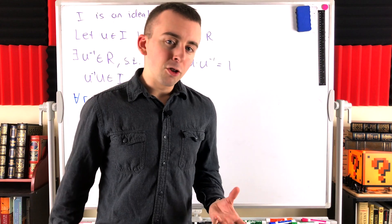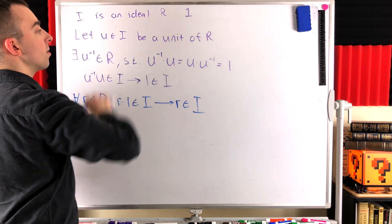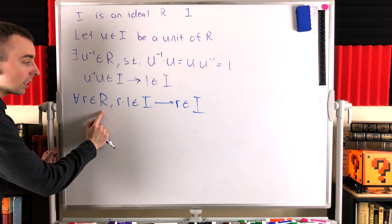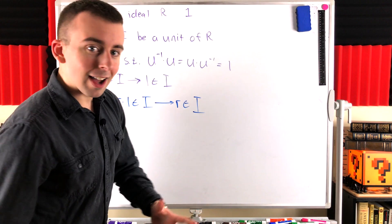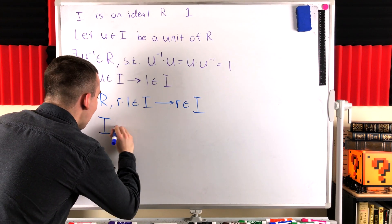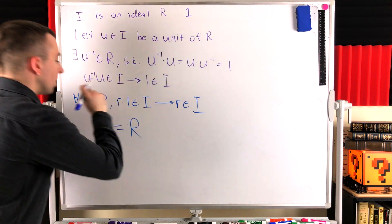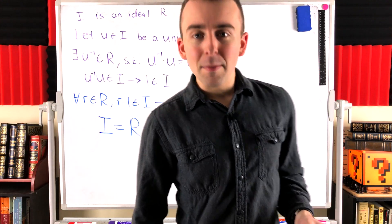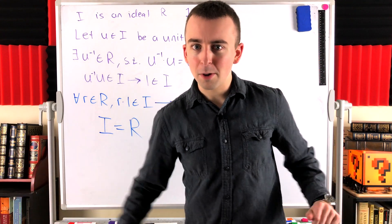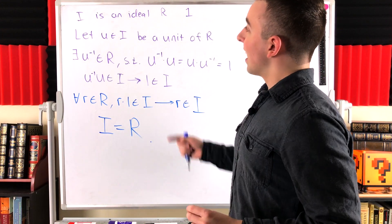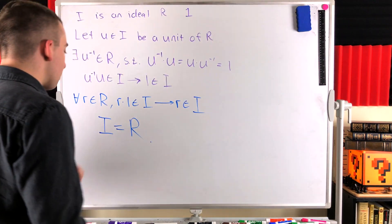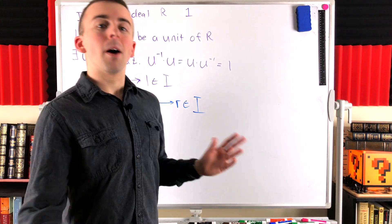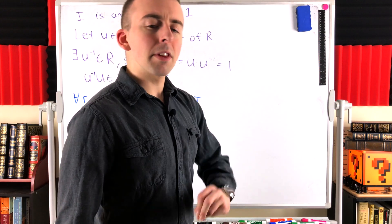Then, by definition of ideal of a ring, we already know that I is a subset of R. We just showed that R is a subset of I, because every element of R is an element of I. Thus, by definition of set equality, we have that the ideal I is equal to the ring R, which means that I is not a proper ideal. So we just showed: if I contains a unit, then it is not a proper ideal. Thus, if it is a proper ideal, it can't possibly contain a unit. That completes the proof of the first direction.